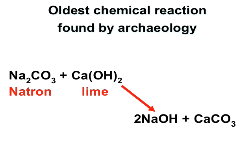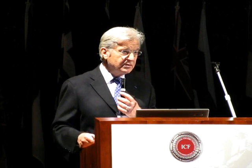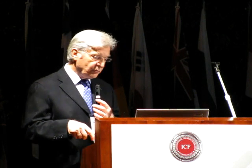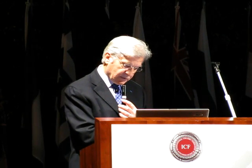We start with a salt called natron and add lime. We have different chemical possibilities depending on the salt available: either sodium carbonate, potassium carbonate, or sodium sulfate. They will yield either sodium or potassium hydroxide and the production of calcium carbonate. There is a multitude of chemical reactions that can be used to initiate the geopolymerization.